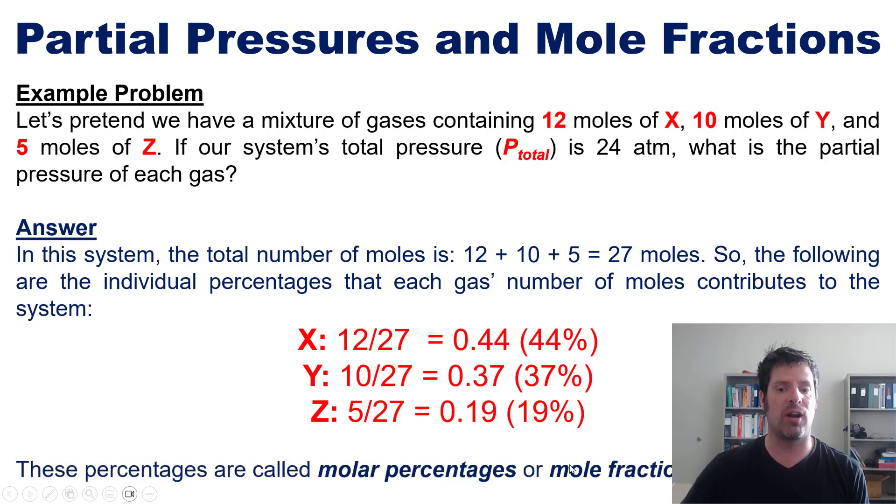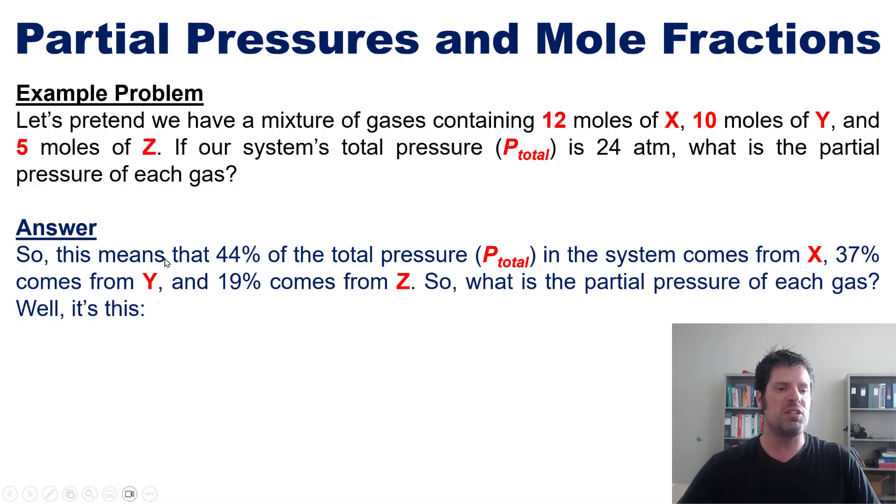These mole percentages by the way are also called mole fractions. I don't really know why because they're decimals here not fractions but that's what we call them. This means then that 44 percent of the total pressure in our system comes from gas X, 37 comes from Y, and 19 comes from Z.